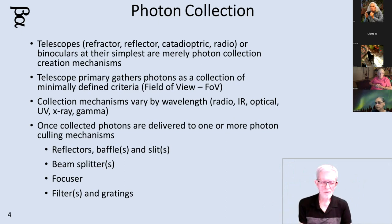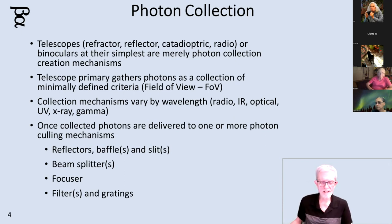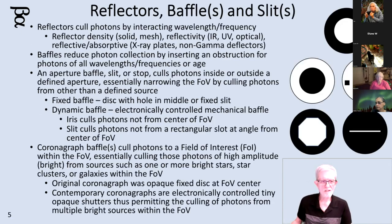What you'd use are reflectors, baffles, slits, beam splitters, focusers, filters, and gratings. All of these are tools for culling photons — getting rid of the photons you don't want, or focusing on the photons that you do want.